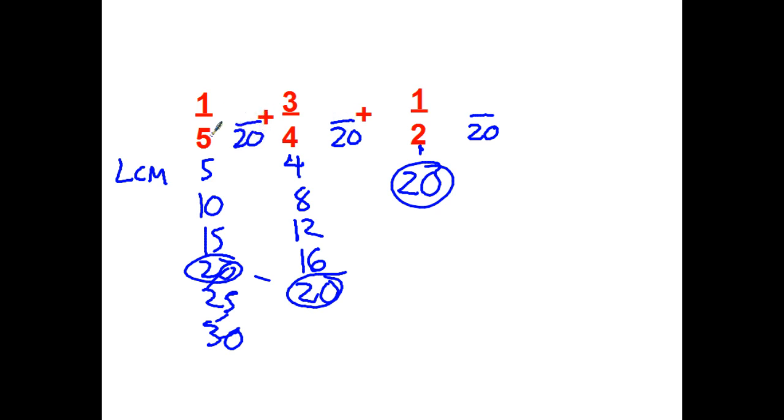So the five, I had to take times four, so I'm taking the one times four equals four-twentieths. The four, I have to take times five, so I'm taking the three times five equals fifteen. The twos times ten, so I'm taking the one times ten.